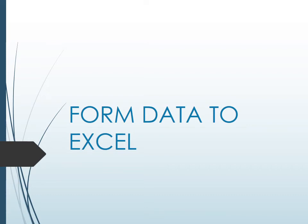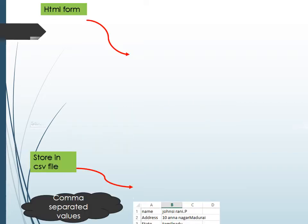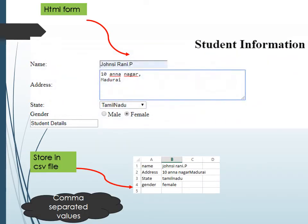In this video, we are going to see how to store HTML form data into Excel in a Django project. This Django template form has name, address, state, and gender fields. This data will be exported into CSV format (comma separated values) and stored in an Excel file.